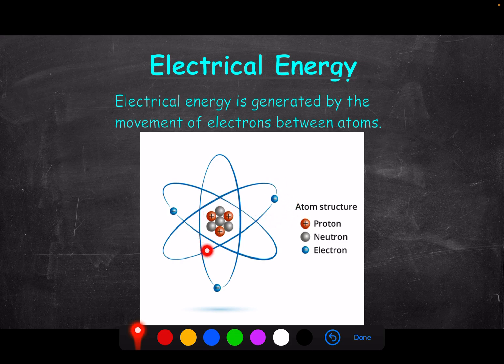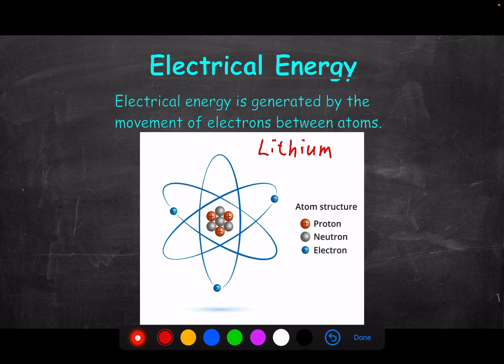When we talk about electrical energy, only the electrons move — never the nucleus with the protons and neutrons. This particular atom is a lithium atom. Lithium has three electrons and three protons, and it's popular in making batteries because it's great for creating the electric potential needed to produce an electric current.